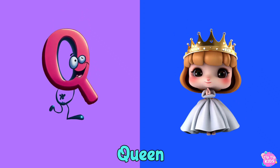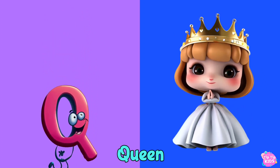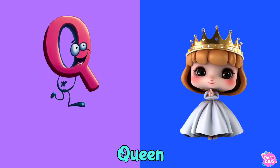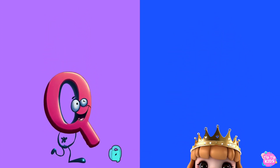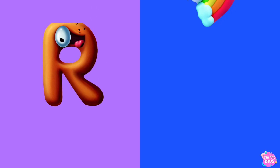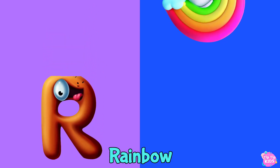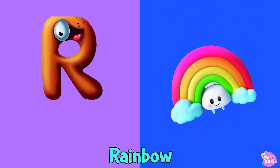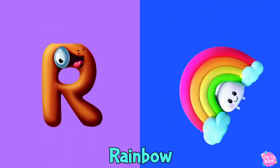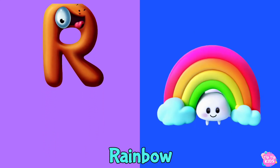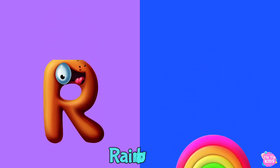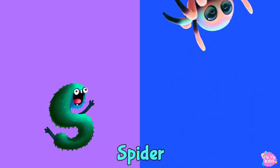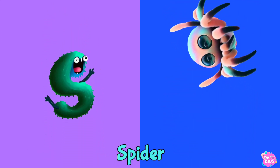Q is for Queen. Q, Queen, Q, Queen, Q. Queen. R is for Rainbow. R, Rainbow, R, Rainbow, R.